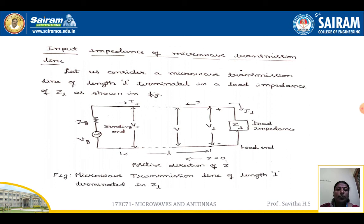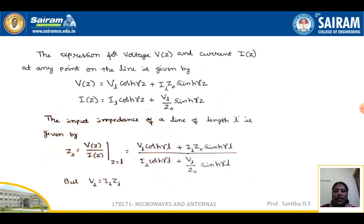Now, the input impedance of microwave transmission lines. Consider a microwave transmission line of length l terminated in a load impedance ZL. The line has a sending end and a receiving end where ZL is connected. Current flowing through the load is IL and voltage across the load is VL. The voltage and current at any point z are: V(z) = VL cosh(γz) + IL·Z₀ sinh(γz), and I(z) = IL cosh(γz) + (VL/Z₀) sinh(γz).